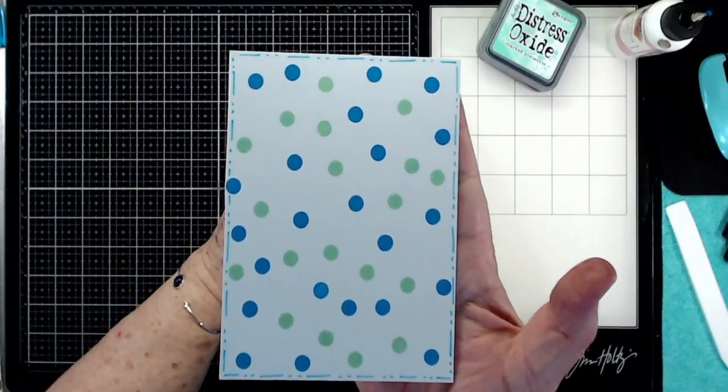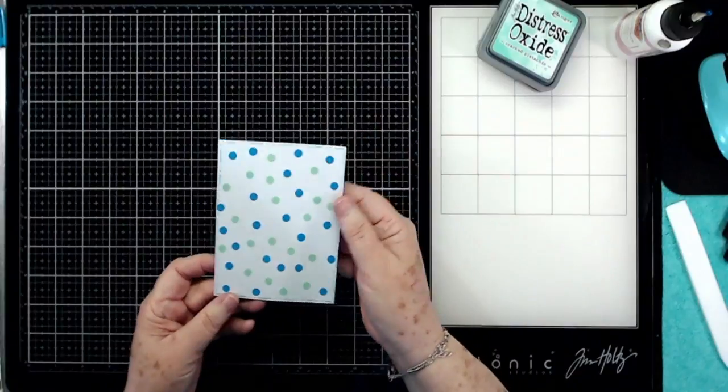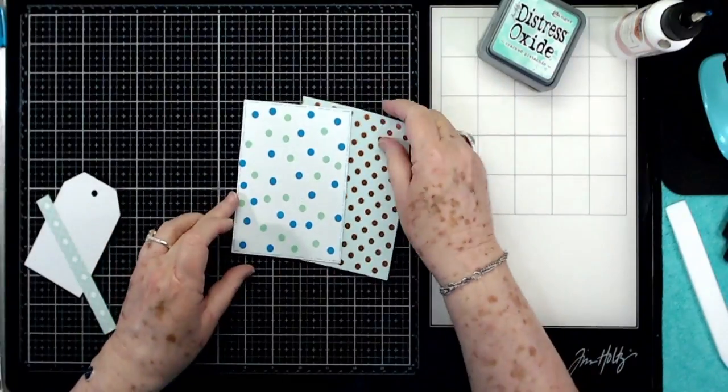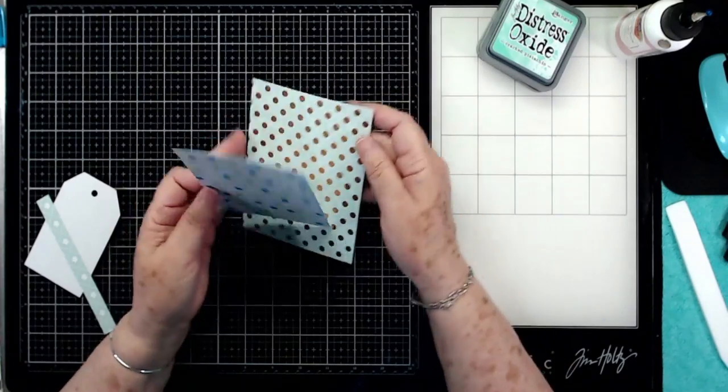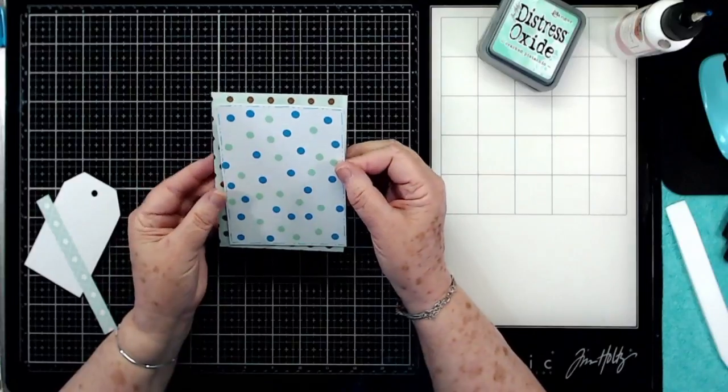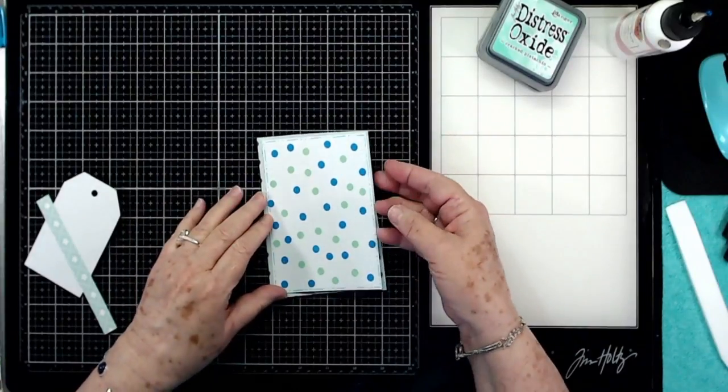All right, so there we go with that. I think that kind of finishes out the edges of the card. And now we're going to put this card front together. Now I'm going to use just a scrap piece of paper for the background that has the gold dots on it. I'm going to kind of stay with the dot theme here, so I'm going to put that down in the back.